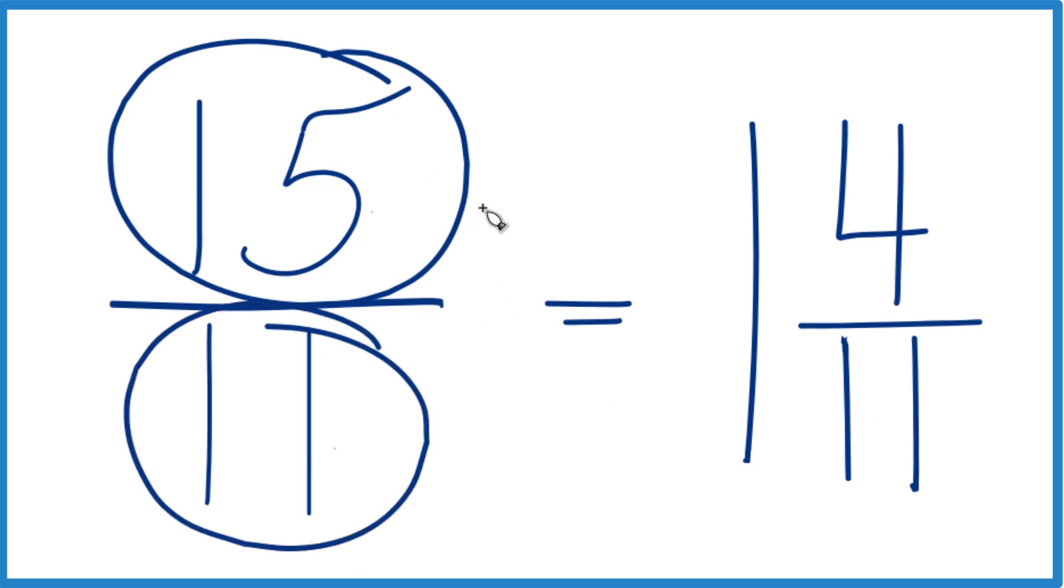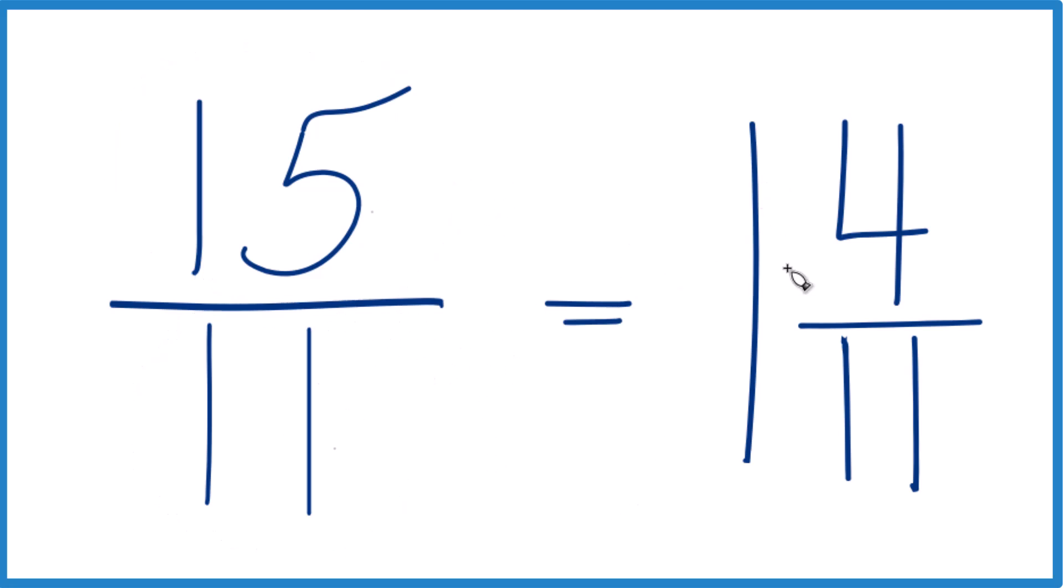So that's it. That's how you simplify 15 elevenths. It's already simplified. And write it as a mixed number, which is 1 and 4 elevenths.